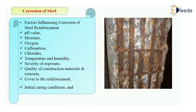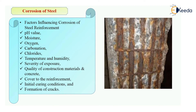Then initial curing conditions — which curing methods you are adopting, whether proper curing is done or not, that will also lead to the formation of corrosion. And lastly, formation of cracks — whenever there are cracks, various environmental impacts will be there on the concrete surfaces as well as on the steel. There are chances of infiltration of carbon dioxide through those pores or cracks, which will react with the steel, form corrosion, and lead to rusting of steel reinforcement.